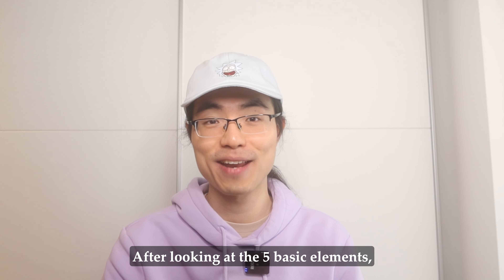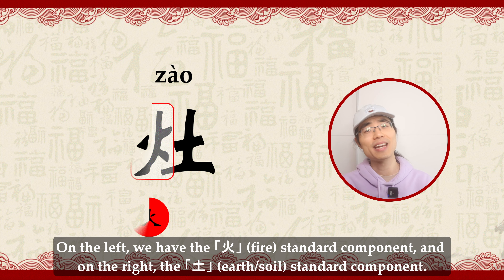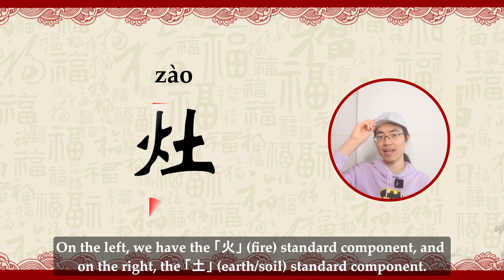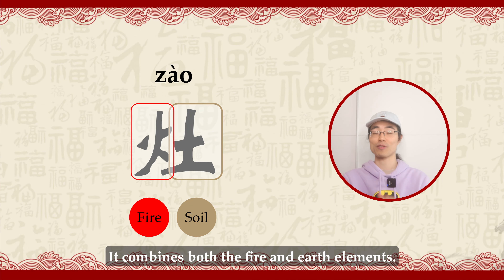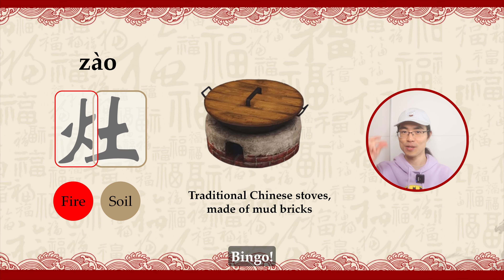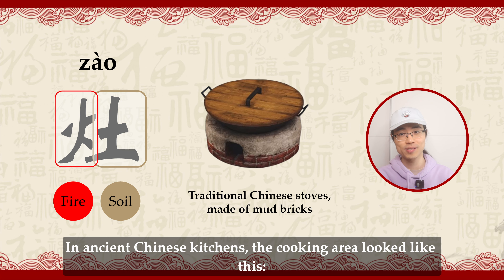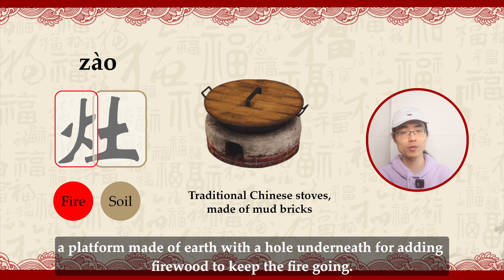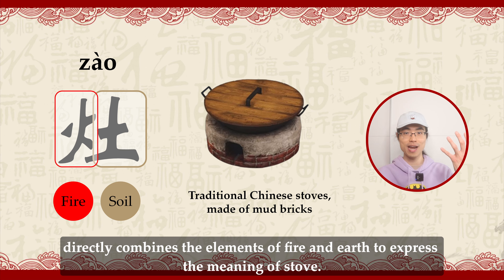After looking at these five basic elements, let's take a look at an interesting character. On the left we have the fire standard component, and on the right the earth or soil standard component — so it combines both fire and earth elements. Can you guess what it is? It is a Chinese old-style stove. In ancient Chinese kitchens, the cooking area looked like a platform made of earth with a hole underneath for adding firewood to keep the fire going. Therefore, the Chinese character Zào (灶) directly combines the elements of fire and earth to express the meaning of stove.